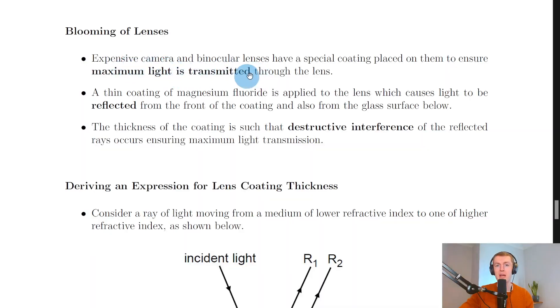It starts here by saying that expensive camera and binocular lenses have a special coating placed on them to ensure maximum light is transmitted through the lens. A thin coating of magnesium fluoride is applied to the lens which causes light to be reflected from the front of the coating and also from the glass surface below. The thickness of the coating is such that destructive interference of the reflected rays occurs, ensuring maximum light transmission.